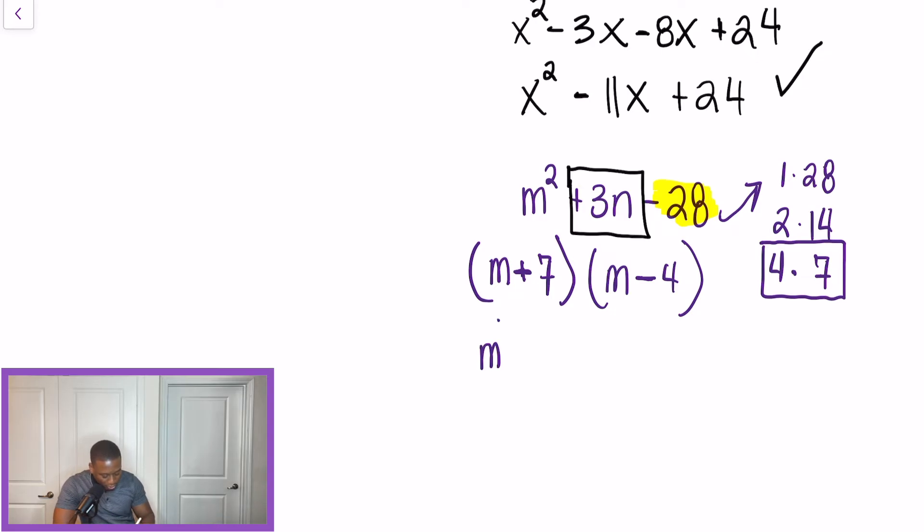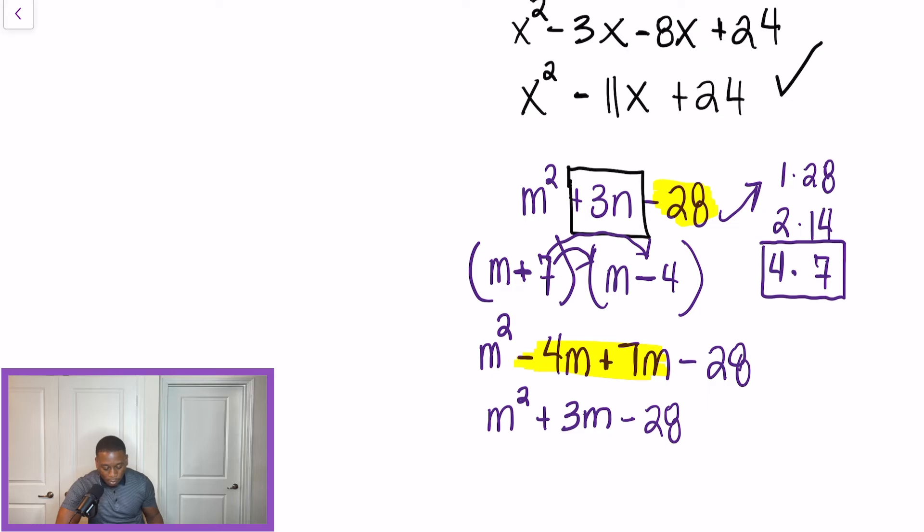And when we check this back and we multiply, we'll get m² - 4m. And then we're going to go now and multiply 7 times m and 7 times negative 4. So, we'll get plus 7m minus 28. Now, we're combining our like terms, which are these two middle terms. And when we're combining like terms with opposite signs, we subtract and keep the sign of the larger number. So, 7 minus 4 gives me 3. And if my larger number is positive, that means that we're going to get a positive answer as a result.